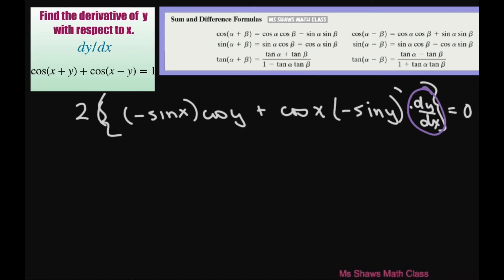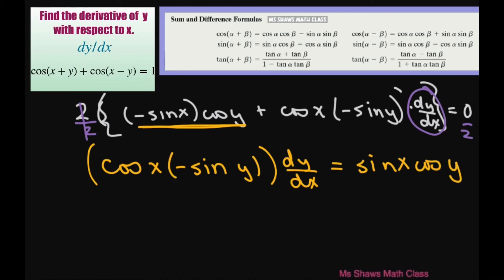So we're going to subtract. First of all, we can divide both sides by 2. So we divide both sides by 2. That's just going to give you 0. So we don't have to deal with the 2 anymore. So now let's go ahead and add this to both sides. So you get cosine of x times negative sine of y. And that's dy dx equals sine of x cosine of y. And then we're going to divide both sides by this.